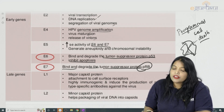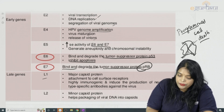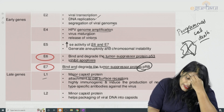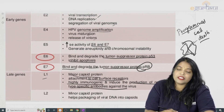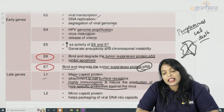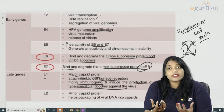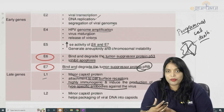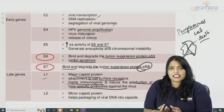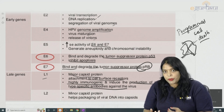Now for the late genes: L1 is the major capsid protein responsible for attachment to cell surface receptors. It is highly immunogenic and induces the production of neutralizing antibodies against the virus. This L1 gene helps cervical cells produce antibodies against HPV, but the natural immunity from HPV infection is very short-lasting and not able to counteract repeated HPV infections.